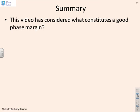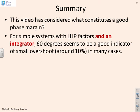In summary, the video's considered what constitutes a good phase margin. For simple systems with left half-plane factors, and critically here, including an integrator, 60 degrees seems to be a good indicator of small overshoot—by which we mean around 10%. We've done a number of examples to show this seems to hold in practice.